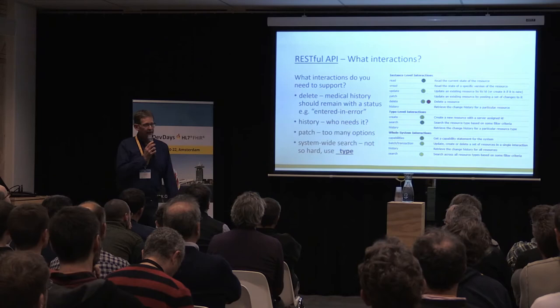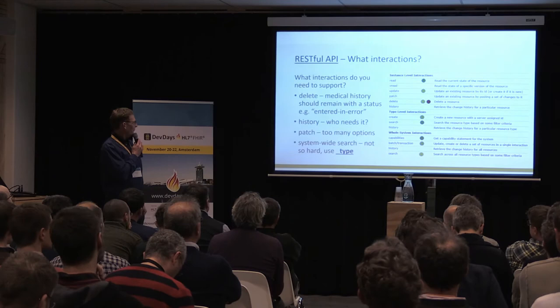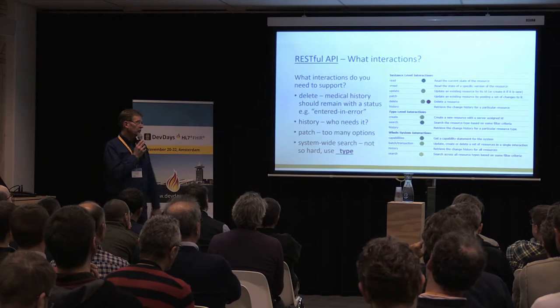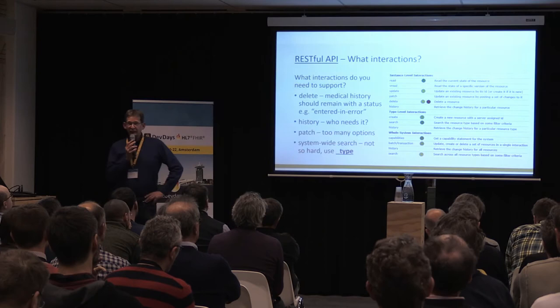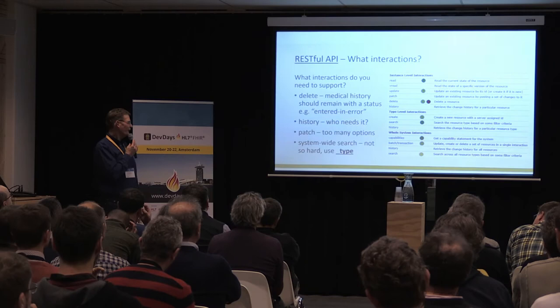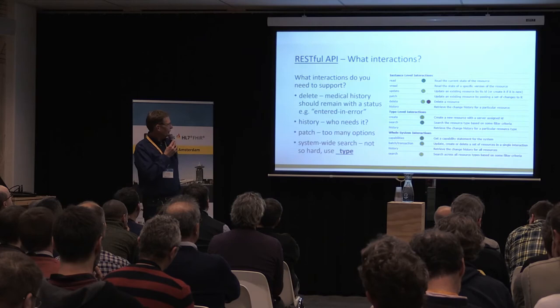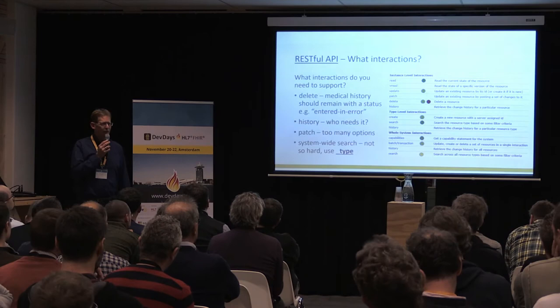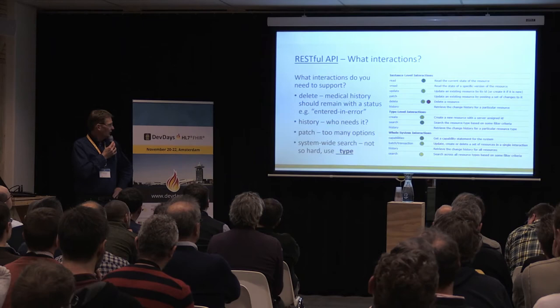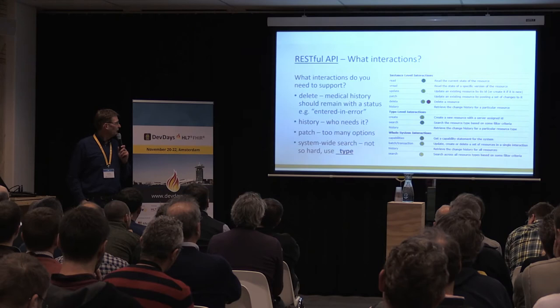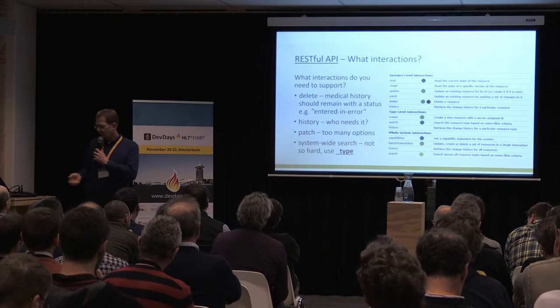Capabilities are very important — it's like the business card of your application, explaining what you can and cannot do. We also use it as a mechanism to check whether you can connect to another application without actually needing to get or change data. Batch and transaction — we didn't have that capability initially, but you can't live without it if you want to support updates and write access. Whole-system search is actually not that hard because you expect the _type search parameter to be specified, and you can only search on common parameters.